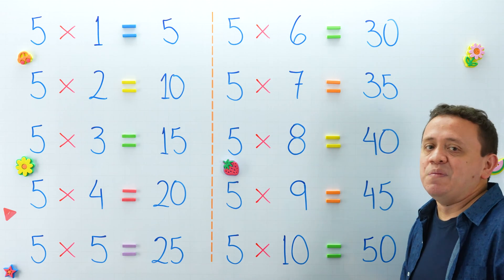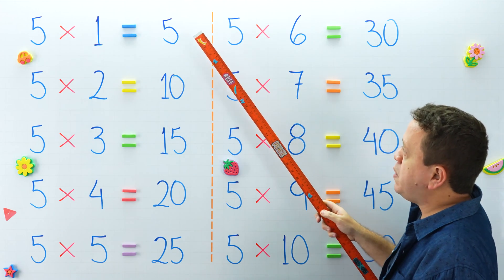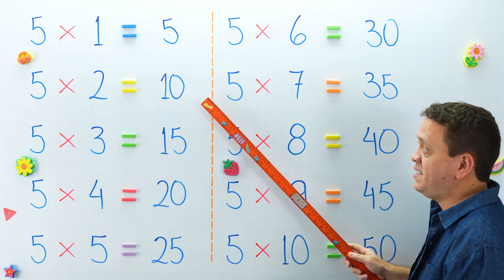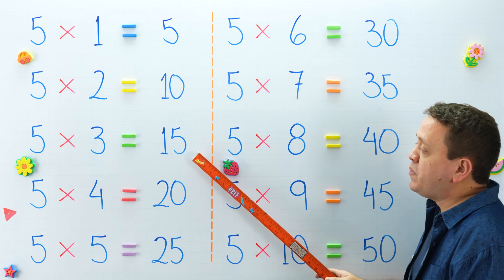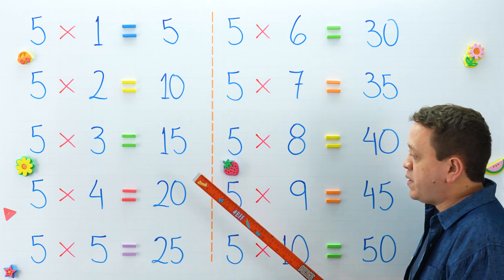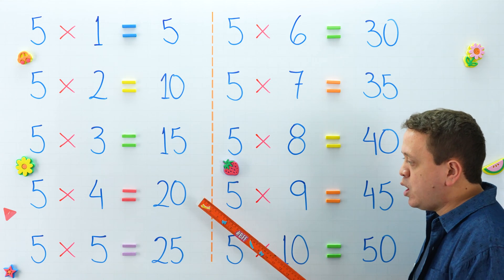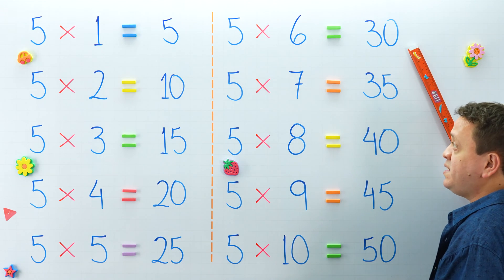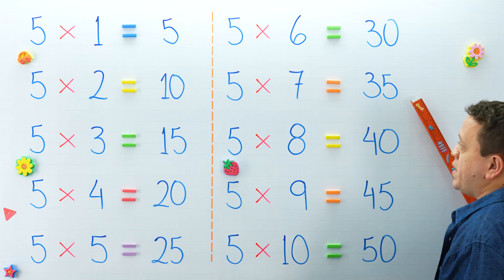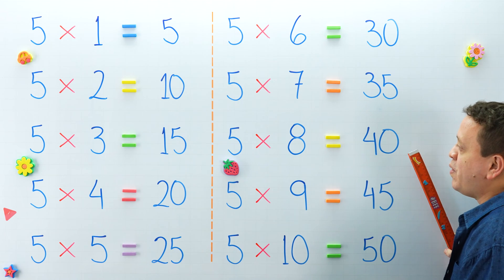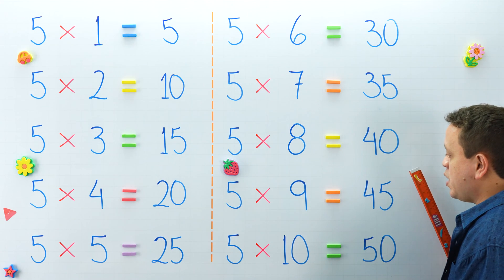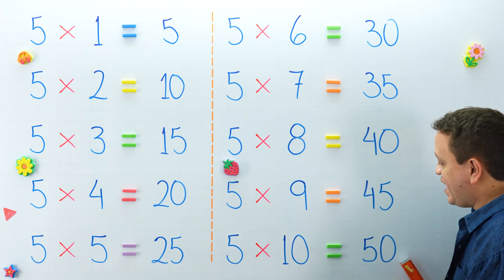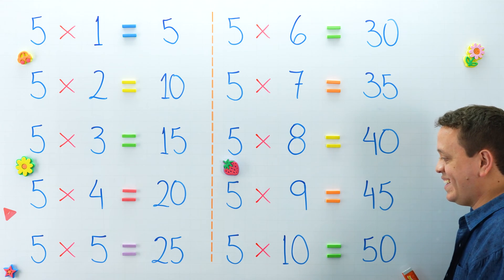Why don't we take another look at the products of this table? Let's start with 5 times 1. 5 times 1 equals? And 5 times 2 equals? 5 times 3 equals? And 5 times 4 equals? What is 5 times 5? 5 times 6 equals? And 5 times 7 is equal to? Over here, 5 times 8 equals? One more, 5 times 9 equals? And 5 times 10 equals? That's it.